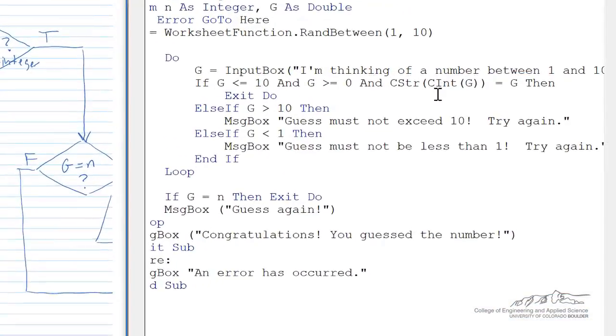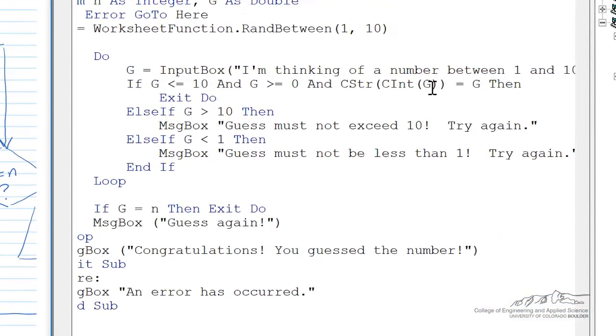And I'm adding in, you can take the integer part of a number, and then we're going to convert it to a string because whatever's input into an input box is treated as a string. So we're going to see if the integer part of G is equal to G itself. This is only going to be true if G is an integer.